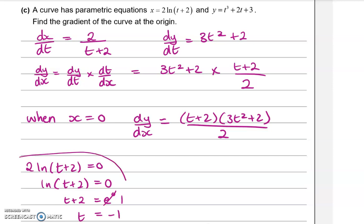So dy/dx, we're working it out when T is minus one. So we want (-1+2) times by 3 times (-1) squared plus 2, all over 2. So we're putting in that parameter of T. And that gives us that dy/dx comes to 5 over 2.